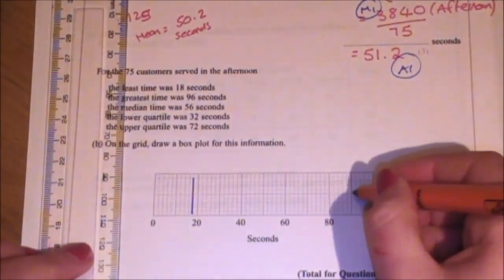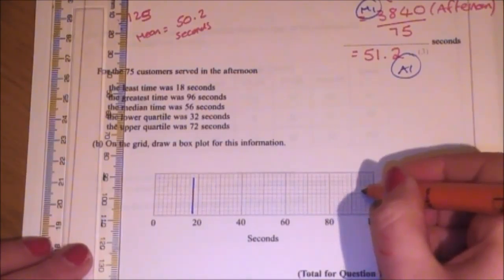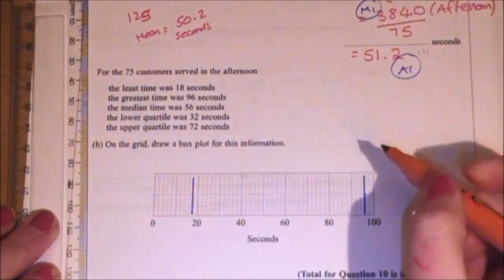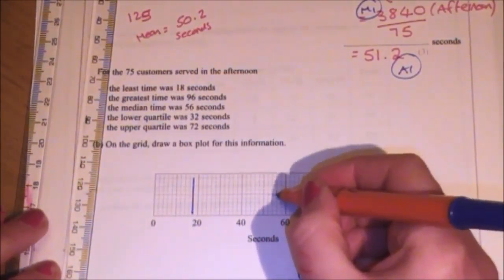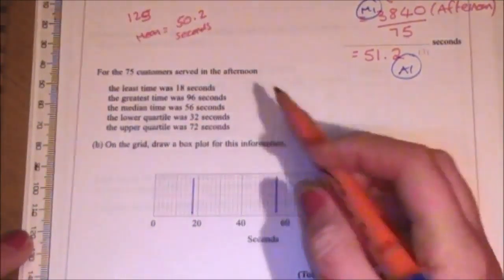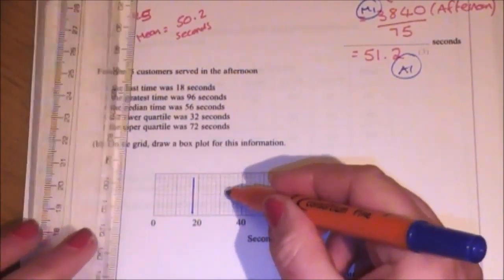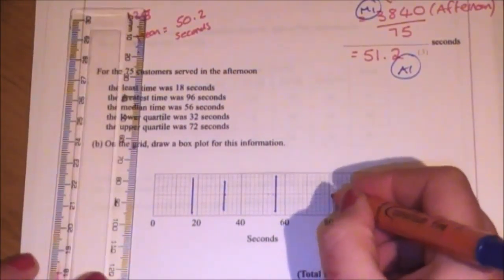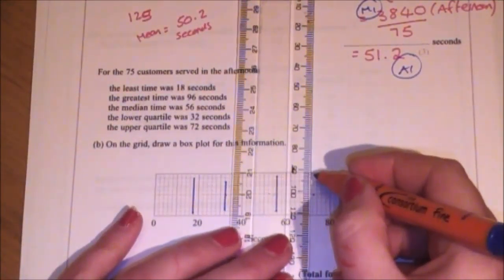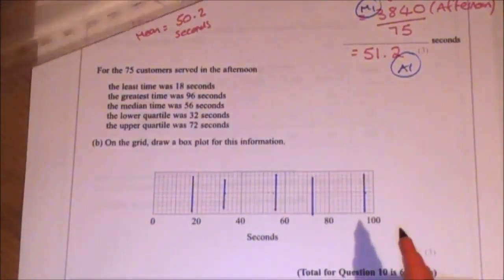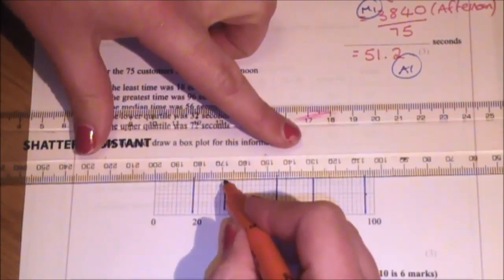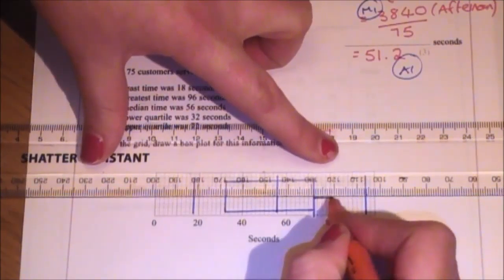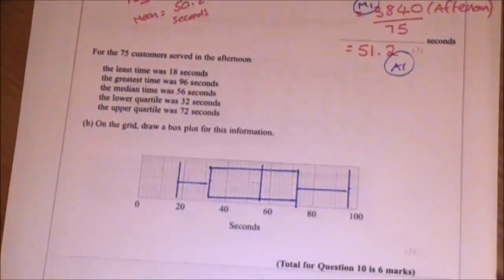Then I'm going to do 96. So that's 80, 90, 92, 94, 96. Then I'm going to do 56, 52, 54, 56. Then 32, 32. Then I'm going to do 72, so 60, 72. And with a box plot, you always join the three middle ones together. And then you connect the minimum and maximums to the outsides of the box.